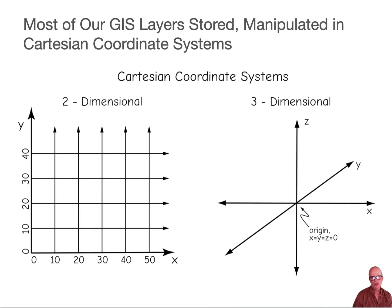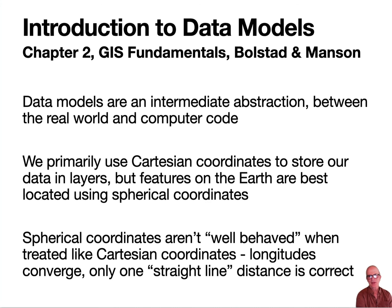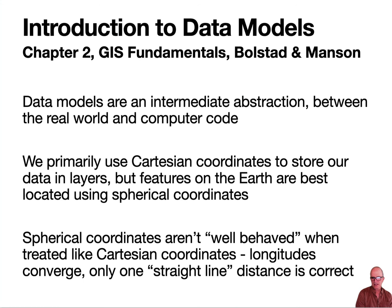Given these issues, we store most of our data in a Cartesian system. Some data is stored in a latitude-longitude spherical system, but we almost always want to convert into a Cartesian system — either explicitly or implicitly — before we do any calculations. Remember, data models are these intermediate abstractions. We can abstract into many different data models for the same area. Think about data in terms of their geography — a set of coordinates — and their main attributes. We primarily use Cartesian coordinates because they're better behaved than spherical coordinates. When we measure in spherical coordinates, we convert to Cartesian, often before storing the data and always before doing our analysis.